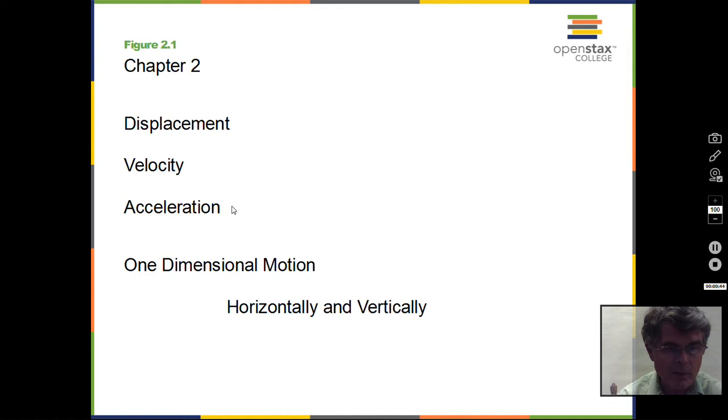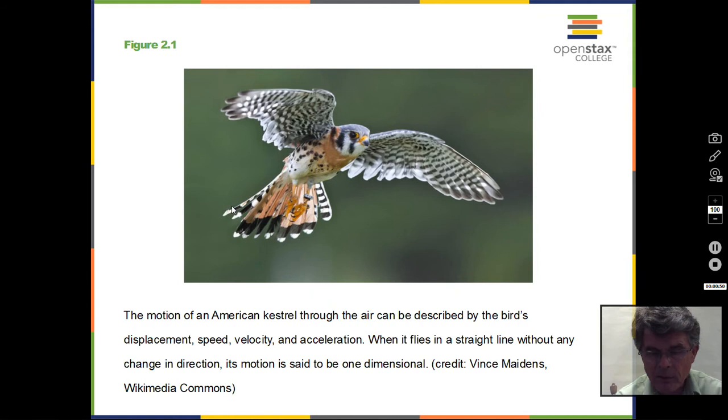But for this particular video, focusing on displacement, distance a little bit, and vectors and scalars. A more complicated motion would be in the real world, such as a bird flying. It's going to go left, right, up and down, and has a three-dimensional motion to it that we're not going to consider. In this chapter, we're going to do straight line motion, one-dimensional motion.